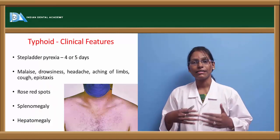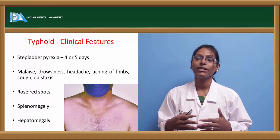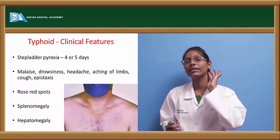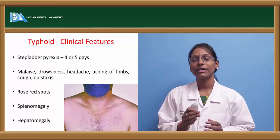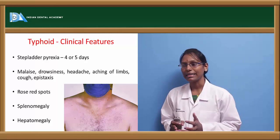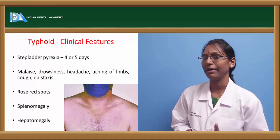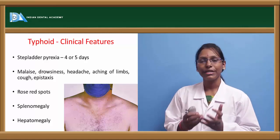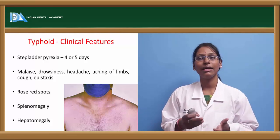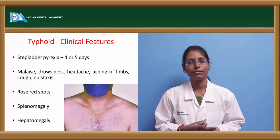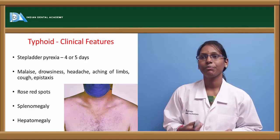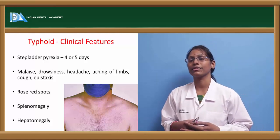After attacking various systems, typhoid gives rise to various clinical manifestations. High temperature is one of the clinical signs, with the characteristic stepladder pyrexia which will last for about 4 to 5 days. The patient will also exhibit other symptoms such as malaise, drowsiness, headache, myalgia, persistent cough, and sometimes epistaxis.